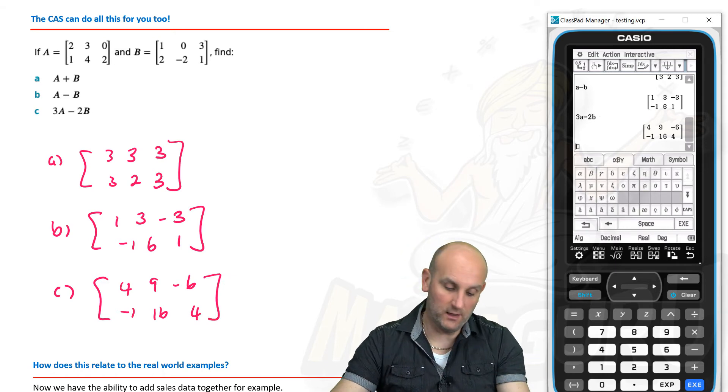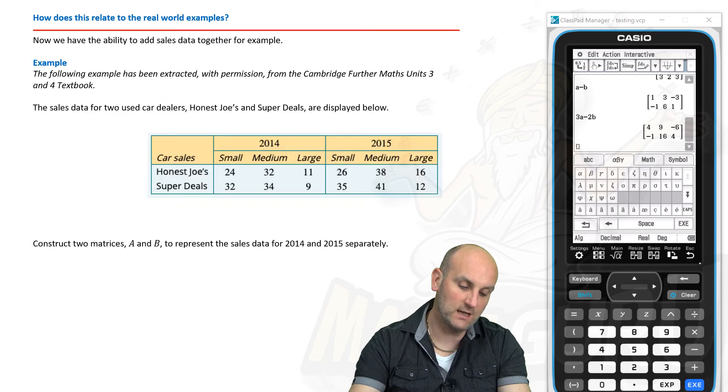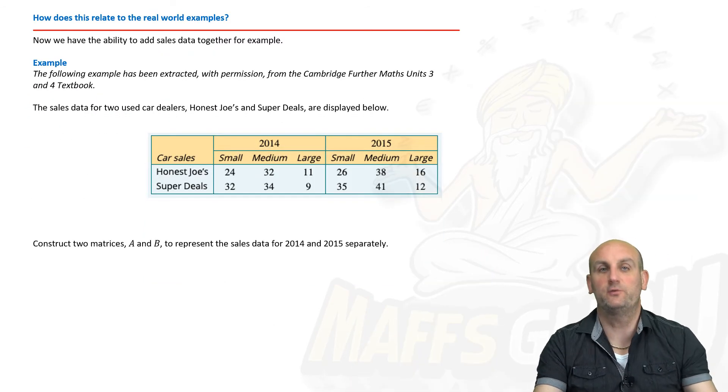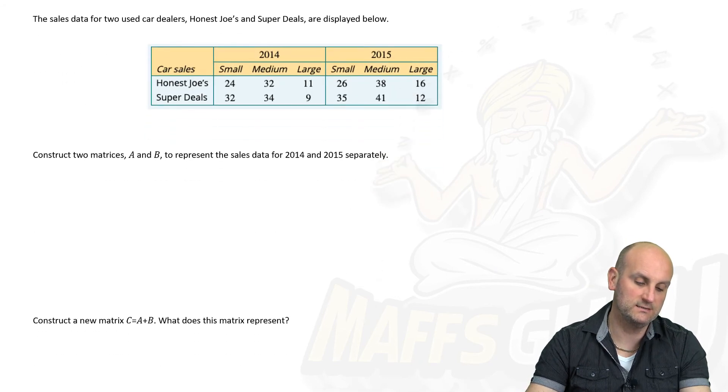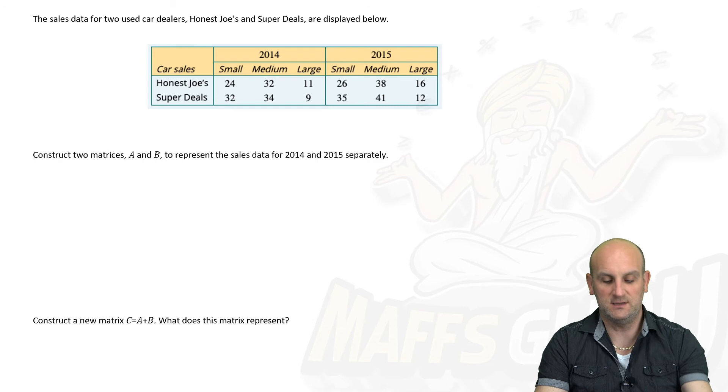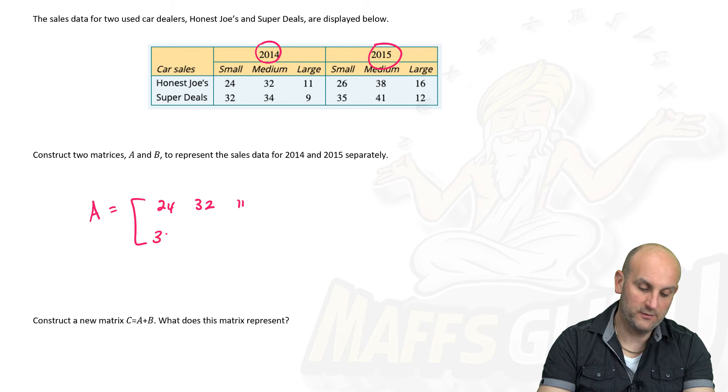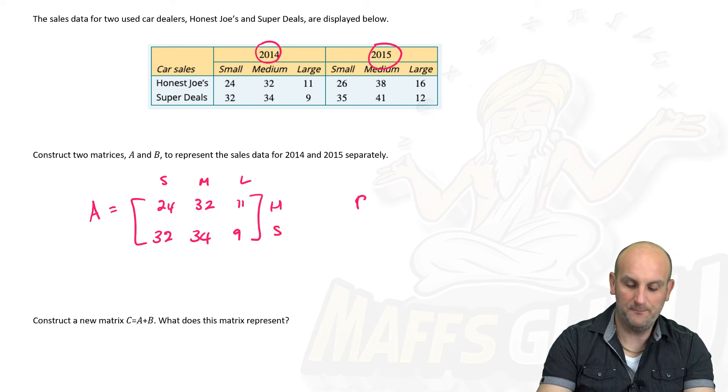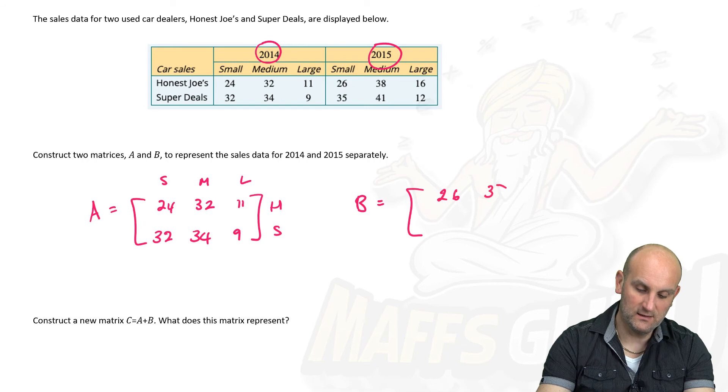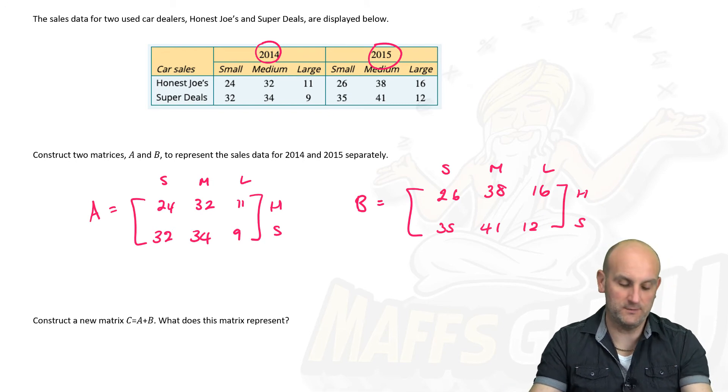So, using my CAS calculator is fine. I can do all that hard work. What does this have to do with real world examples? Okie dokie. Well, the whole point of using matrices is to apply them to real world. So, the sales data for two used car dealers, Honest Joes and Super Dealers are displayed below. So, construct two matrices A and B to represent the sales data for 2014 and 2015 separately. So, they're telling me I want a matrix for this and a matrix for that. So, here is A. That's going to give me 24, 32, 11, 32, 34 and 9. And we've got small, medium, large. We've got Honest Joes and Super Deals. And B. Same. We're going to do 26, 38, 16, 35, 41 and 12. Same. We're going to do small, medium, large, Honest Joes and Super Deals. There are my two matrices A and B.